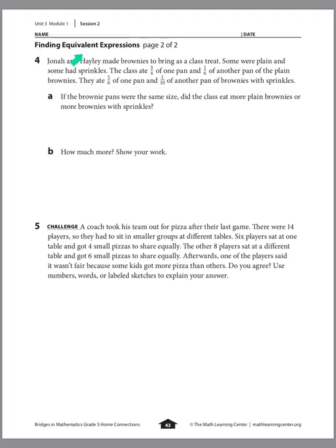Number 4: Jonah and Haley made brownies to bring as a class treat — some were plain and some had sprinkles. The class ate 3 fourths of one pan and 1 sixth of another pan of the plain brownies. They ate 5 sixths of one pan and 1 tenth of another pan of brownies with sprinkles. If the brownie pans were the same size, did the class eat more plain brownies or more brownies with sprinkles? We need to compare plain to sprinkles.